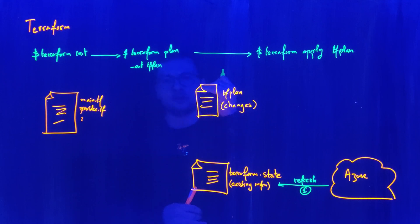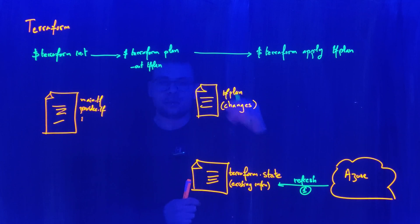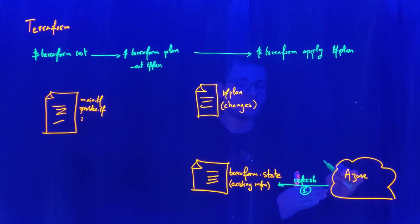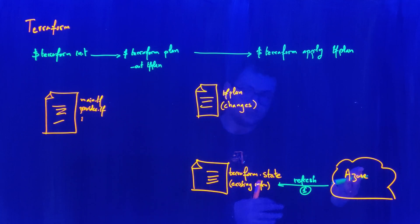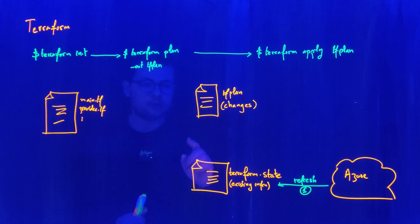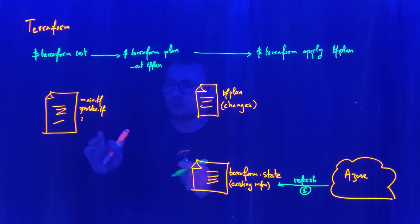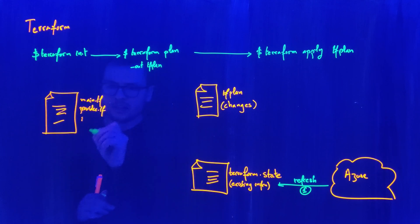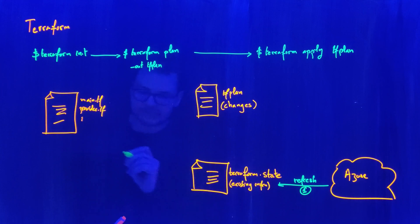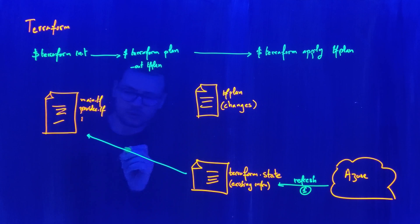We need to make sure that what is described inside the Terraform state file matches exactly what is in Azure. When we run Terraform plan, you will see on the Terraform output console some refreshing operations. It will go through all the resources described in the main tf and verify their configuration against the existing tf state. If there are changes, they will be reflected in the tf state. Then the second step is to make a comparison between the main tf and the Terraform state file — this is the compare operation.